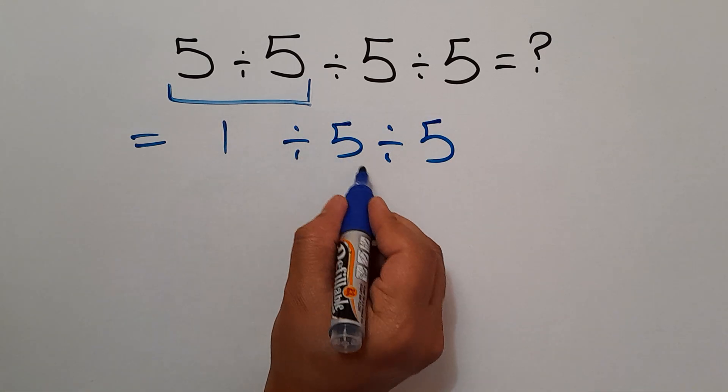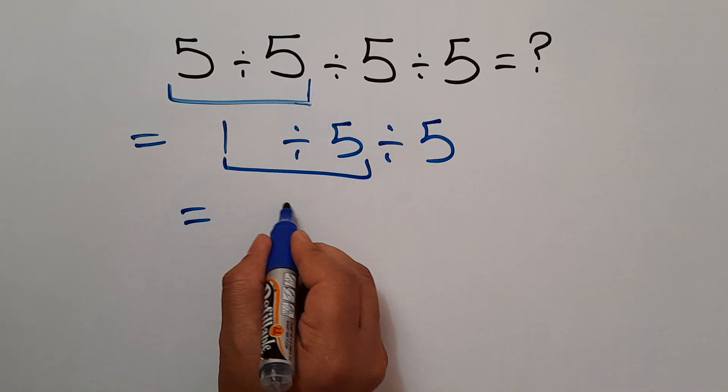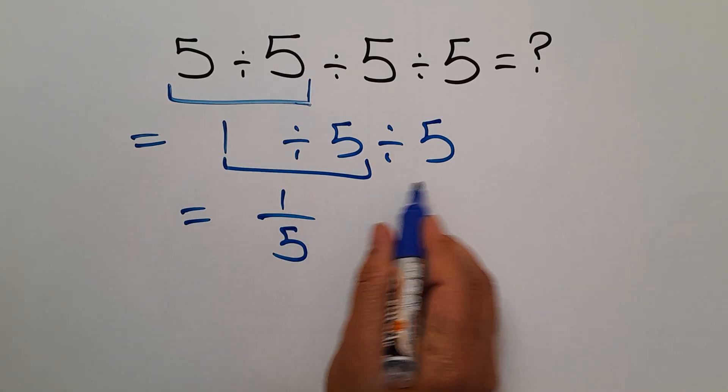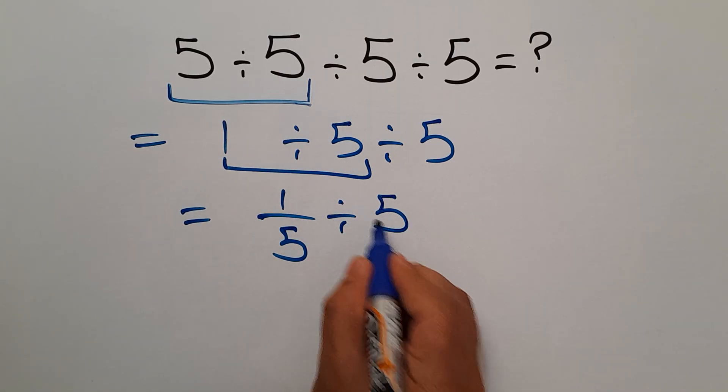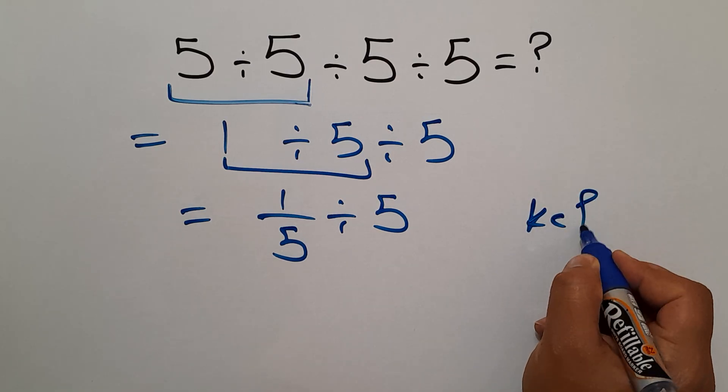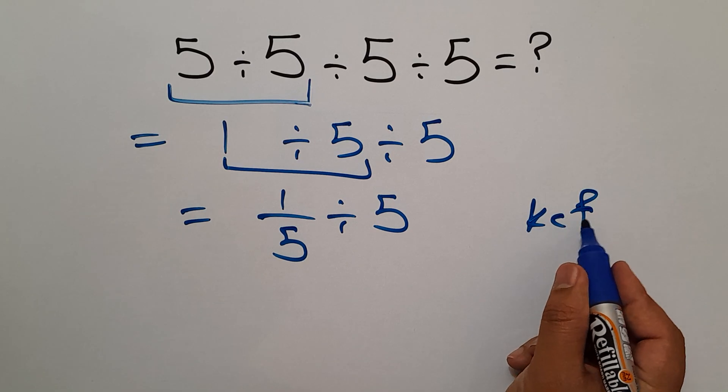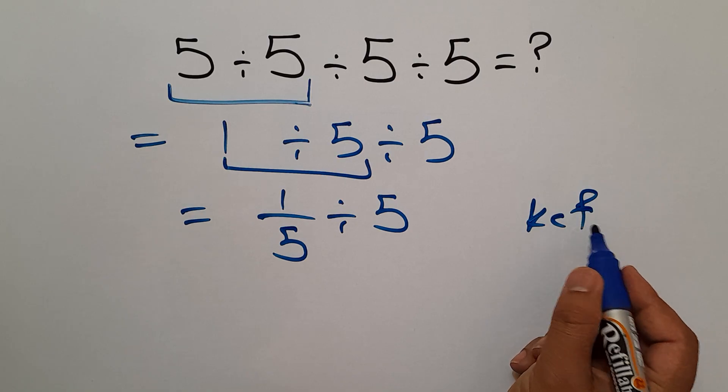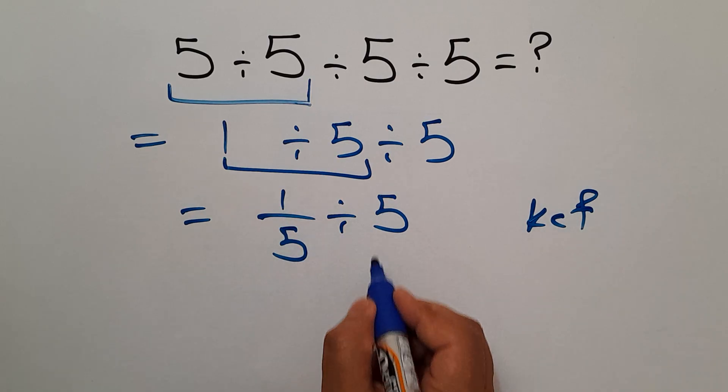1 divided by 5 can be written as 1 over 5, then divided by 5. And now according to the KCF rule, K stands for keep, C stands for change, and F stands for flip. 1 over 5 divided by 5...